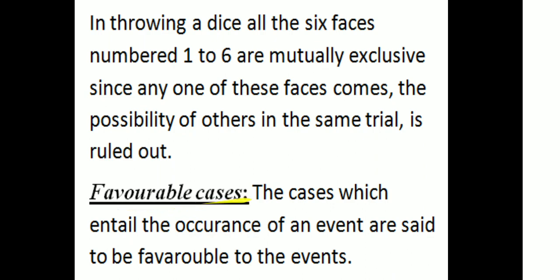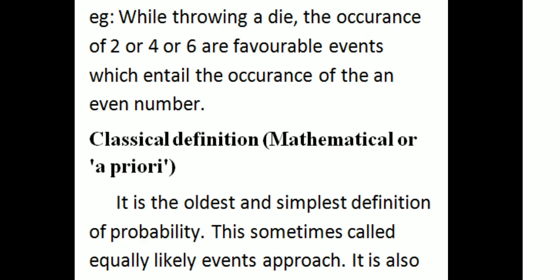Favorable cases: the cases which ensure the occurrence of an event are said to be favorable to that event. For example, while throwing a die, the occurrence of 2, 4, or 6 are favorable events for the occurrence of an even number.